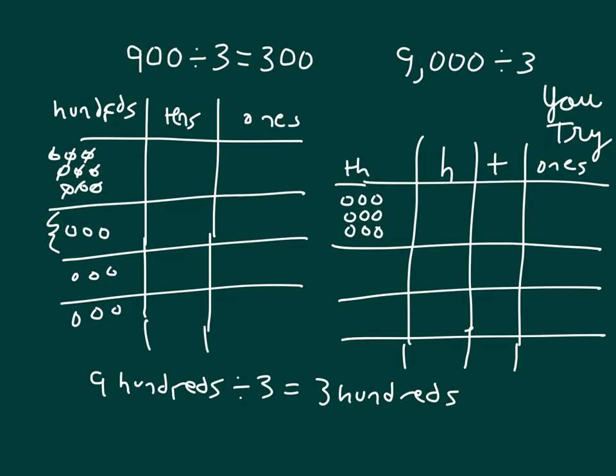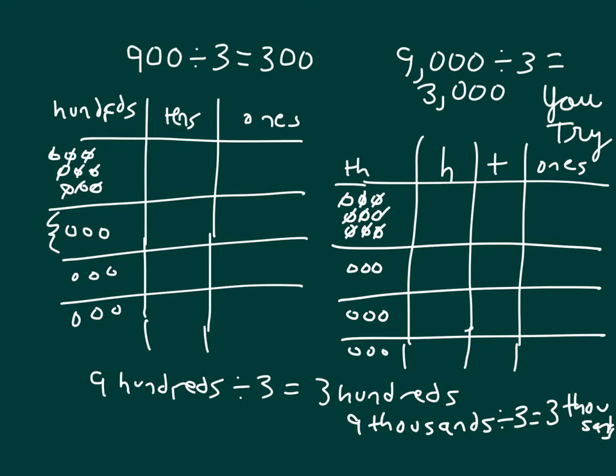The other thing that I would have wanted you to do is to write a number sentence to show that division work. There's 3, there's 6, and there's 9, so that 9 thousands divided by 3 is equal to 3 thousands. Read it with me again: 9 thousands divided by 3 equals 3 thousands. And so you would write that as 3,000. Look over your work.